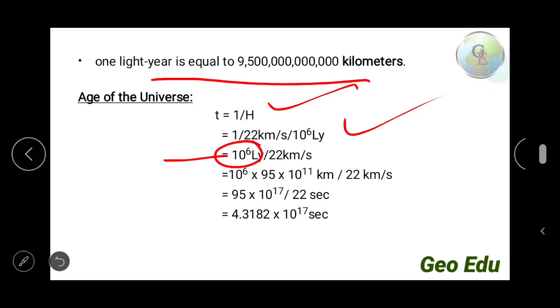So 10 to the power 6 into—I have already told 1 light year is equal to 95 into 10 to the power 11 kilometers—so 10 to the power 6 into 95 into 10 to the power 11 kilometer divided by 22 kilometer per second. Kilometer will get cancelled.